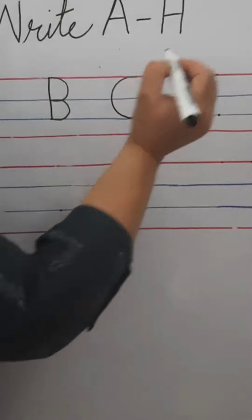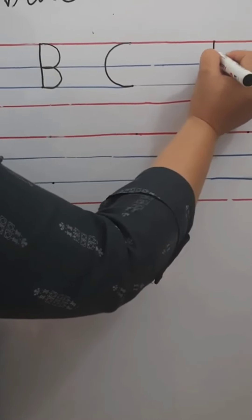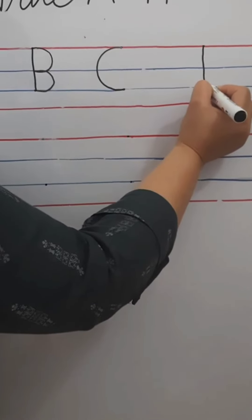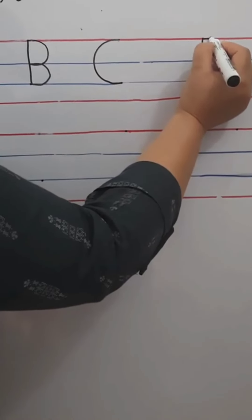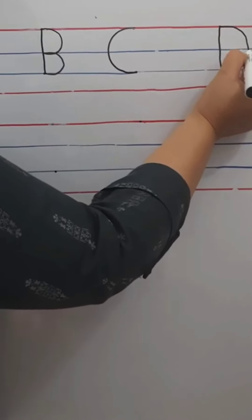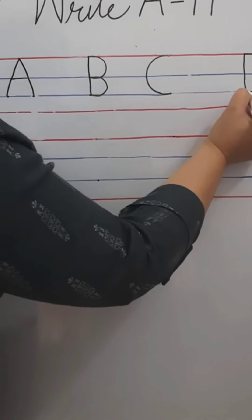Aise hum C banayenge. D banane ke liye, aminok pehle standing line banayenge. Then, again a curve. This is letter D.